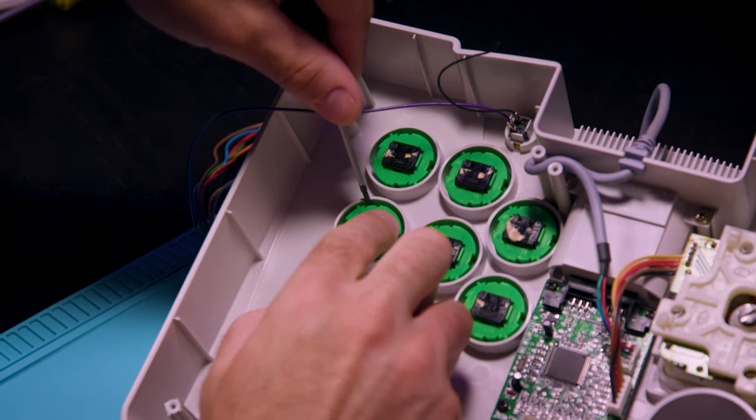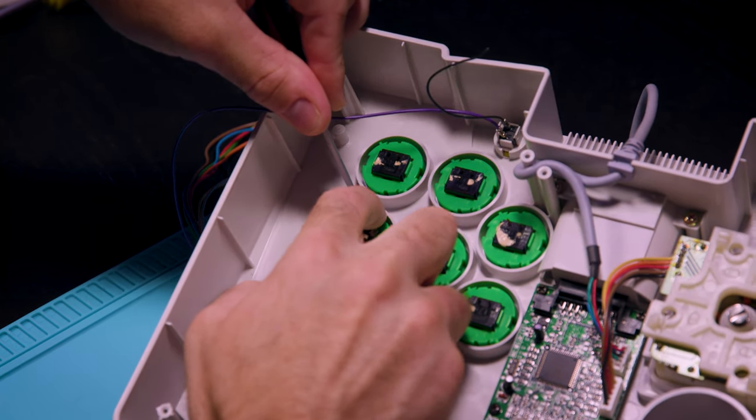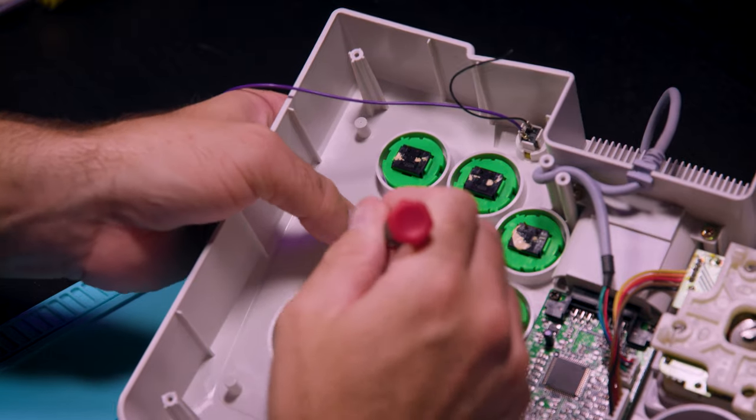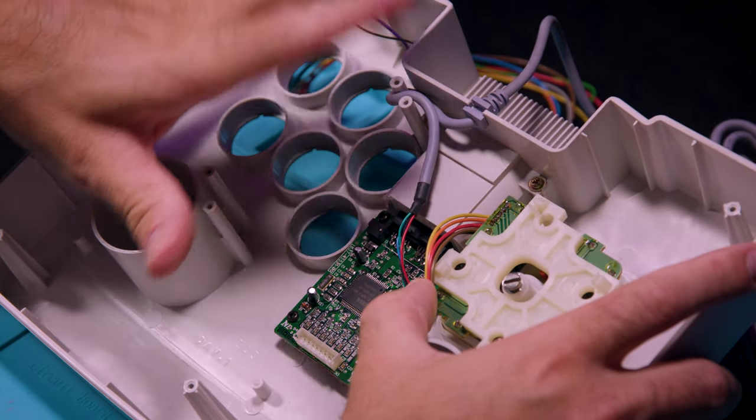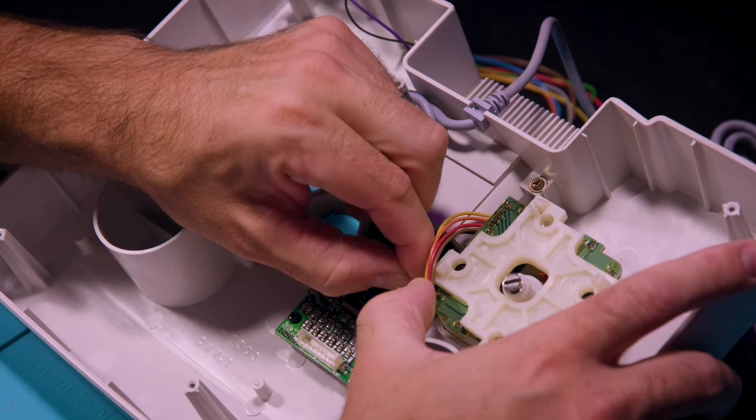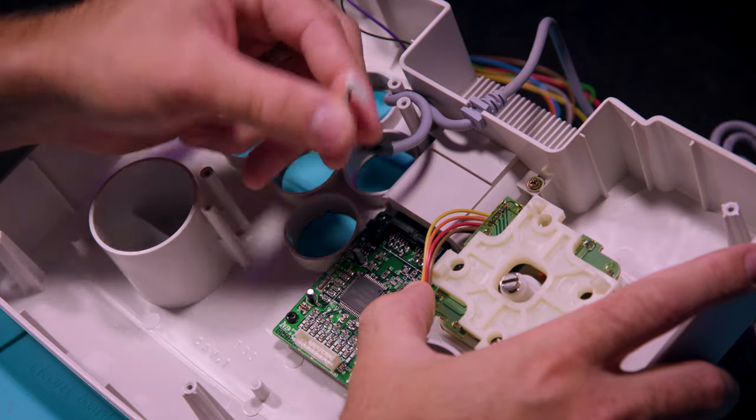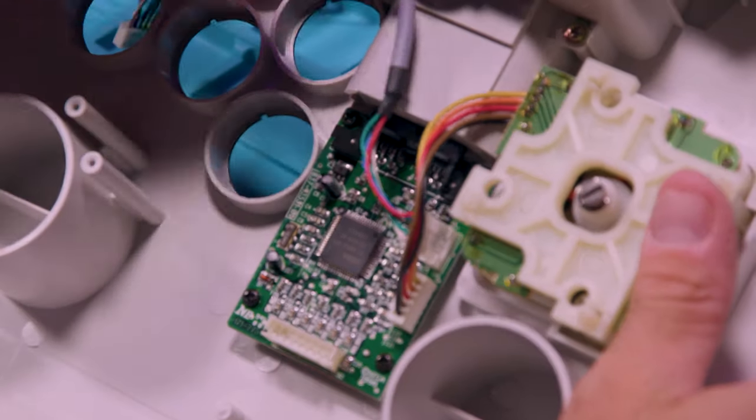Let's pop out those buttons. You can use a flathead screwdriver if you need to, to just pinch the sides of the buttons and pop them right out. Go ahead and remove the Dreamcast controller cable from the Dreamcast PCB and set it off to the side. We're not going to reconnect that until basically the very end.